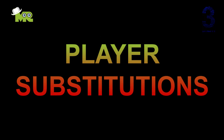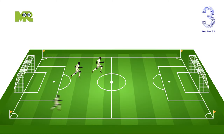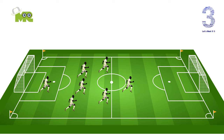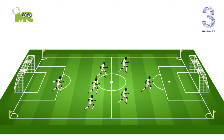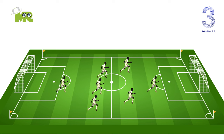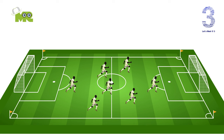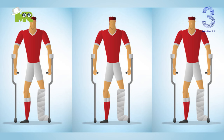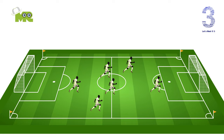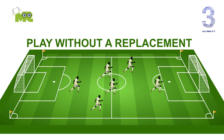Each team can name up to seven substitutes. Substitutions can be made at any time of the match, with each team being able to make a maximum of three substitutions per side. In the event of all three substitutions being made and a player having to leave the field for injury, the team will be forced to play without a replacement for that player.